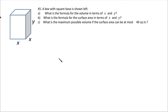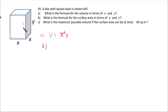A box with a square base is shown. For part A, the formula for volume in terms of x and y is V = x²y, since volume = length × width × height. For part B, the surface area formula: you have four sides each x by y, plus the top and bottom which are both x by x squares, giving SA = 4xy + 2x².